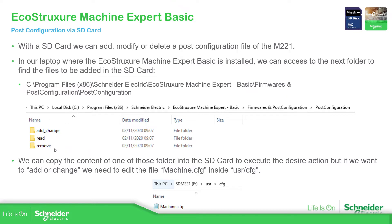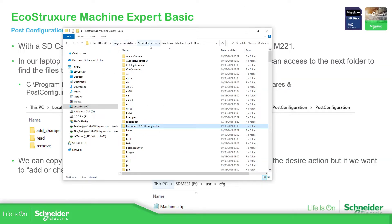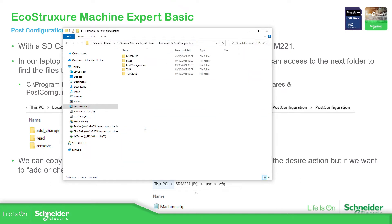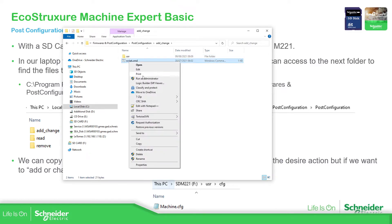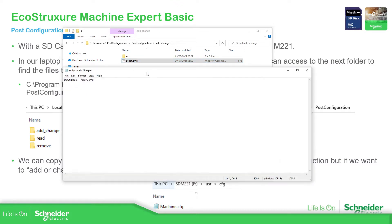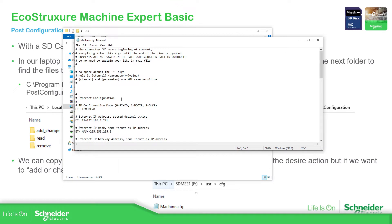Let's try to access these three folders. If we go to where the software is installed from Schneider Electric — EcoStruxure Machine Expert Basic — under firmware and post configuration, you can find the post configuration folder. Going in there, we find those three folders. In the Change folder, we have the script, and if we open and edit it, it says 'Download User CFG'.